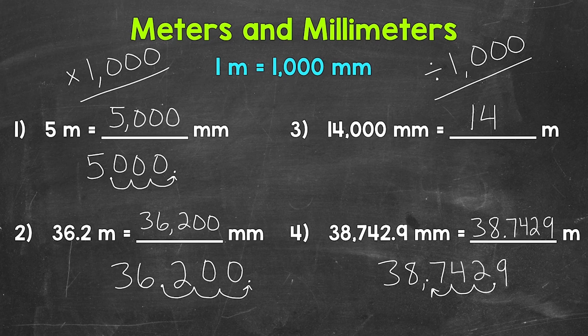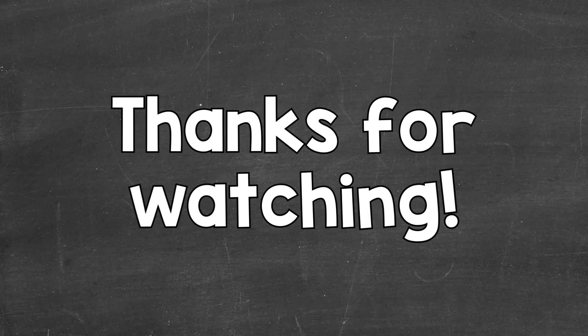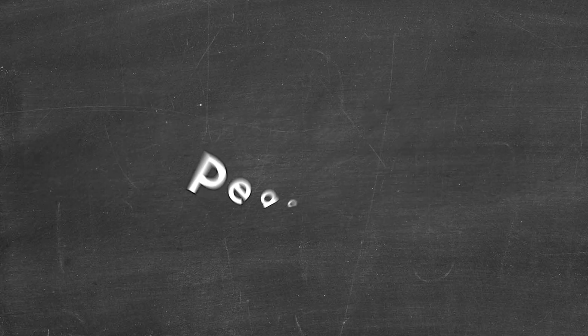So there you have it — that's how you convert between meters and millimeters. When we go from meters to millimeters, we multiply by one thousand, and we can do that by moving the decimal three times to the right. When we go from millimeters to meters, we divide by one thousand, and we can do that by moving the decimal three times to the left. I hope that helped. Thanks so much for watching. Until next time, peace.